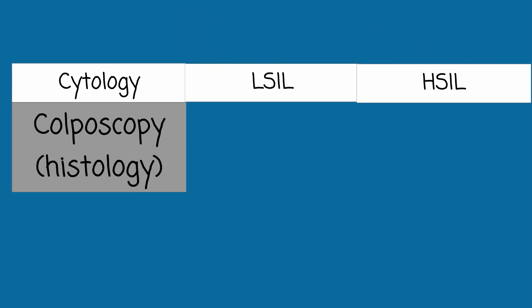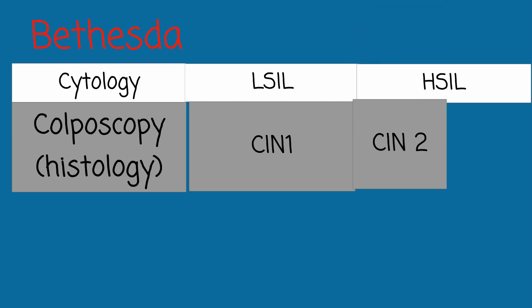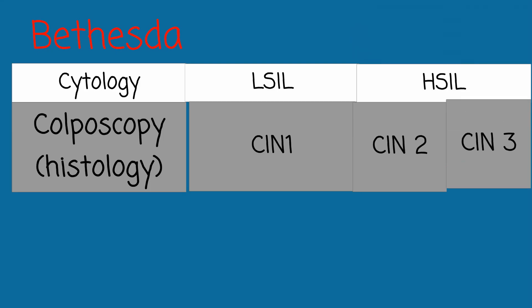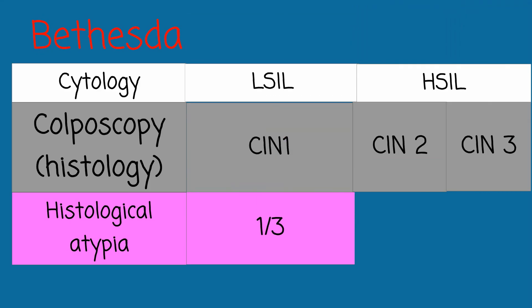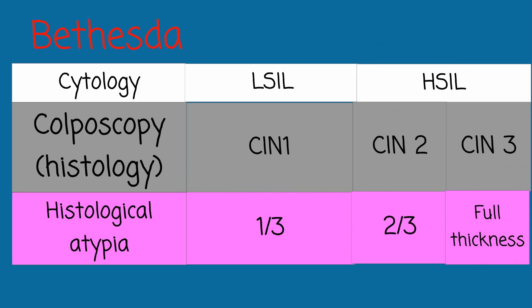There are two common classification systems for describing colposcopic directed biopsy results. The Bethesda system describes biopsies as cervical intraepithelial neoplasias, or CIN — CIN 1, 2, and 3 — classified by the extent that cervical epithelium is replaced by abnormal cells. CIN 1 has one-third of the epithelium involved, CIN 2 has two-thirds, and CIN 3 has full-thickness involvement.